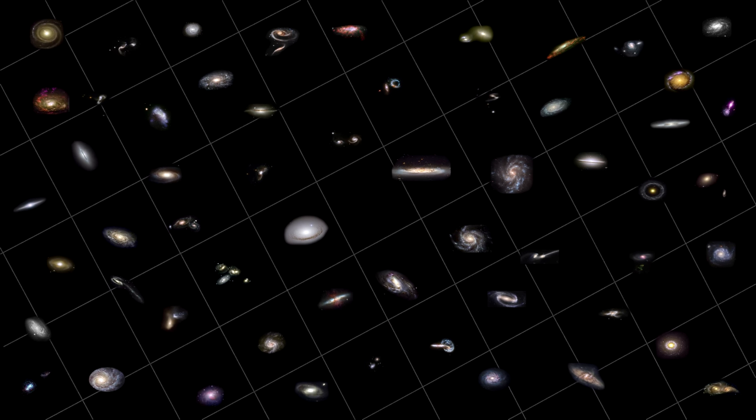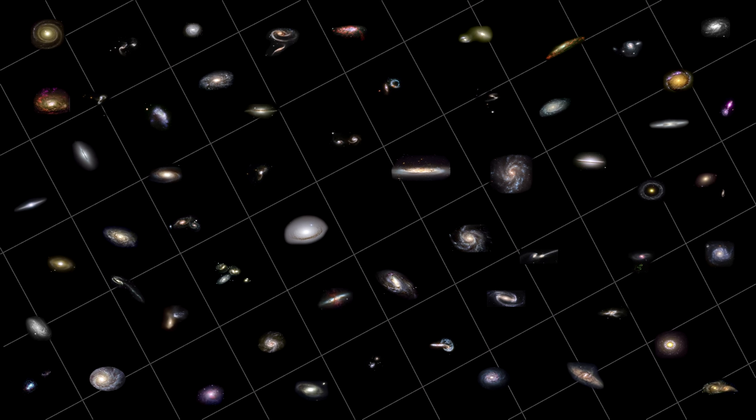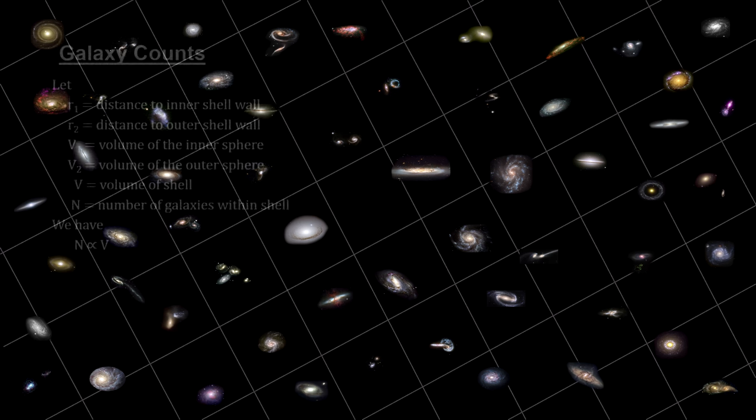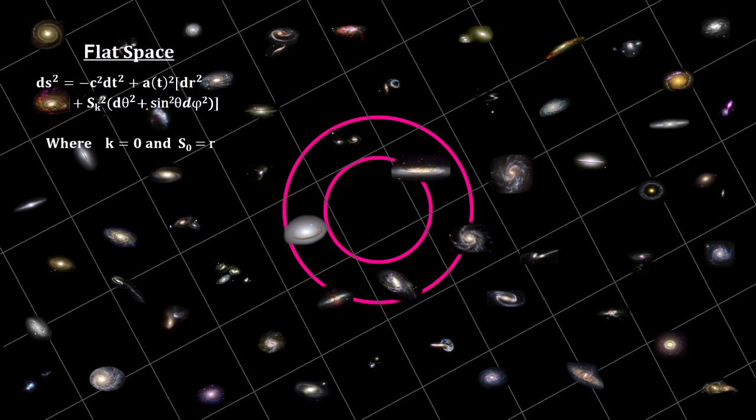You may recall from our video book on general relativity that curved space has different volume implications than we have for Euclidean flat space. So, one way to determine if the universe is flat, spherical, or hyperbolic is to count galaxies at different distances, i.e., different redshifts.